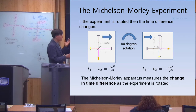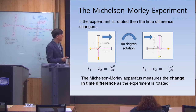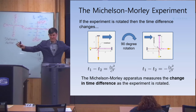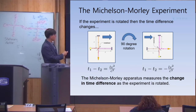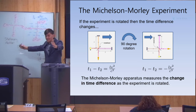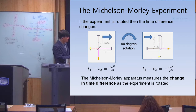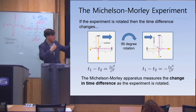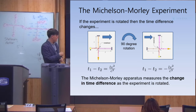Unfortunately, you don't know what the ether velocity is — that's what we're trying to detect. They came up with a very clever idea: you make the experiment so it can be rotated. If the ether velocity is this way then the pink path is longer and the orange path has shorter time. But if you rotate the apparatus by 90 degrees then it's the opposite — the orange path is shorter and the pink path is longer.